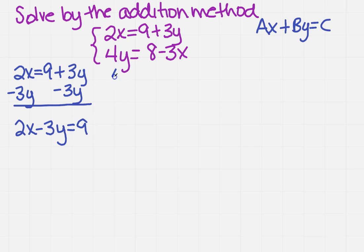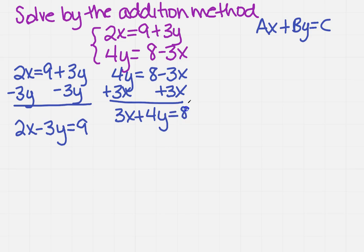And I'm going to do the same thing with the other one. I've got 4y equals 8 minus 3x. I'm going to add 3x in this case to both sides. And then that's going to give me 3x plus 4y equals 8.